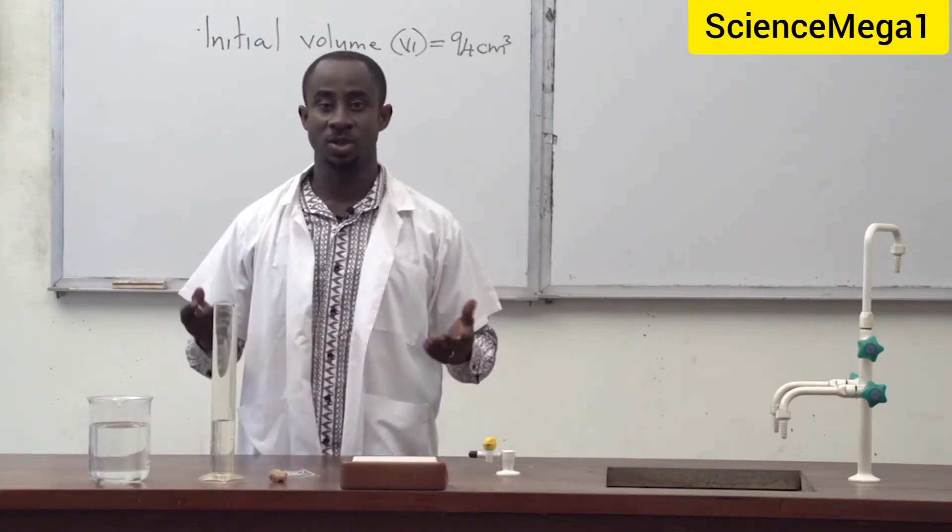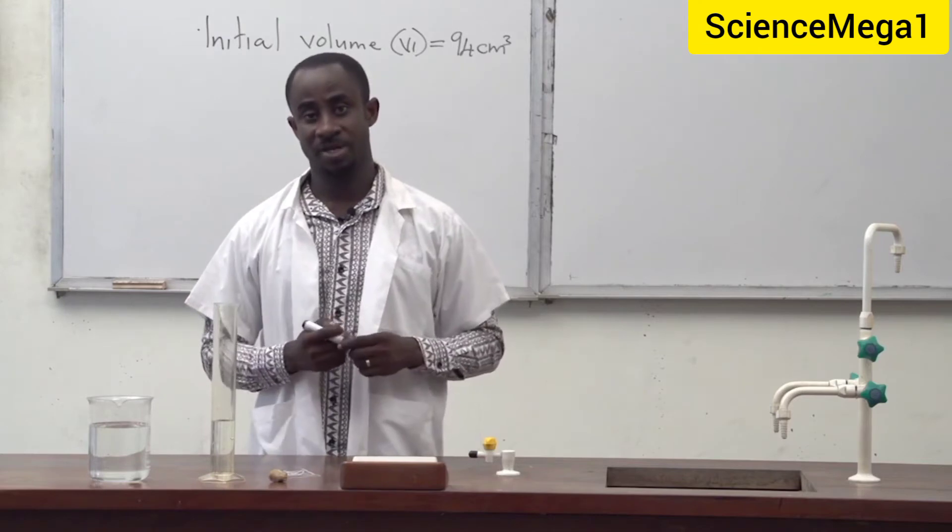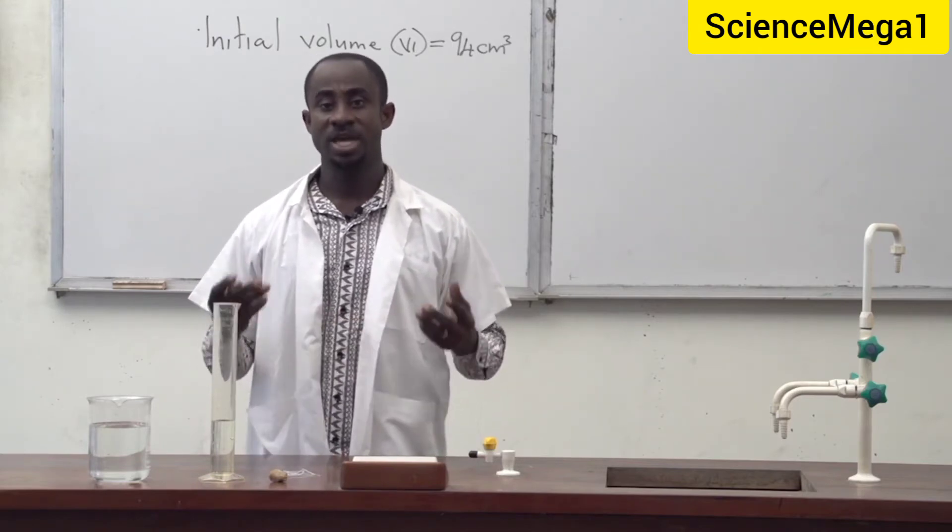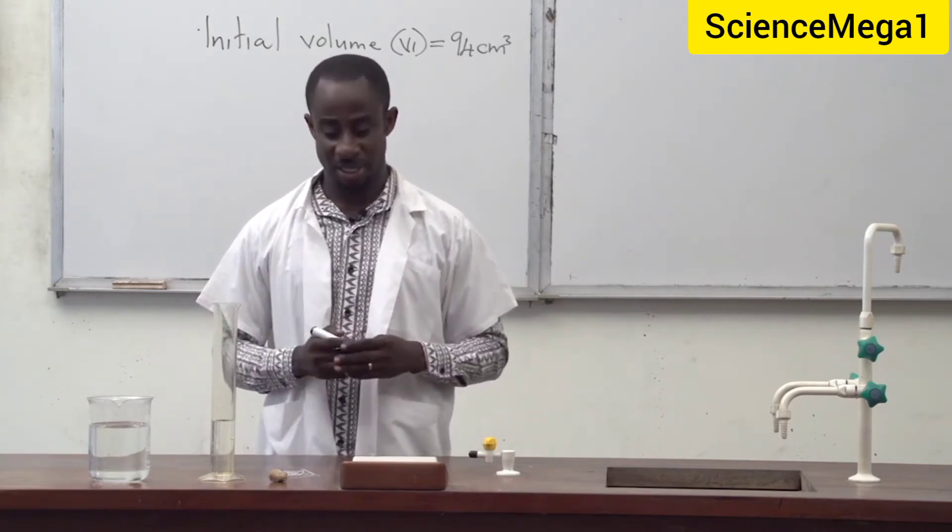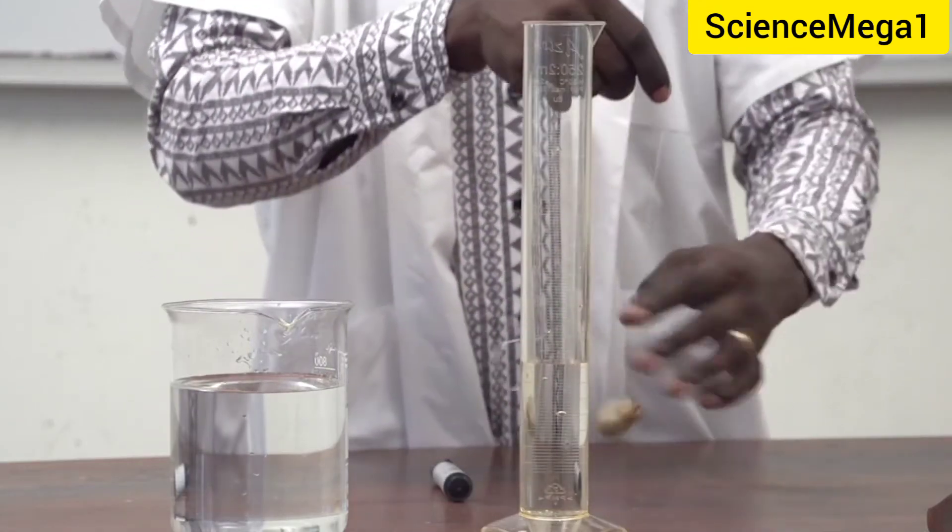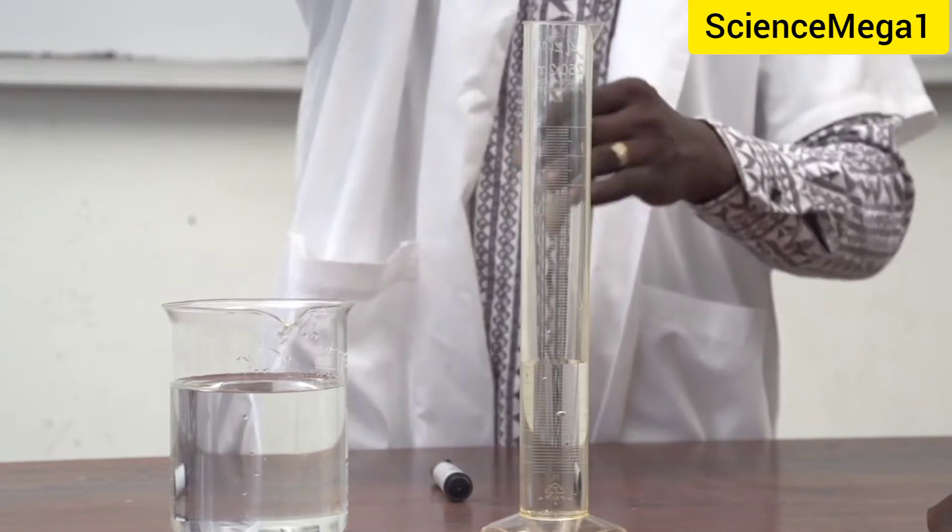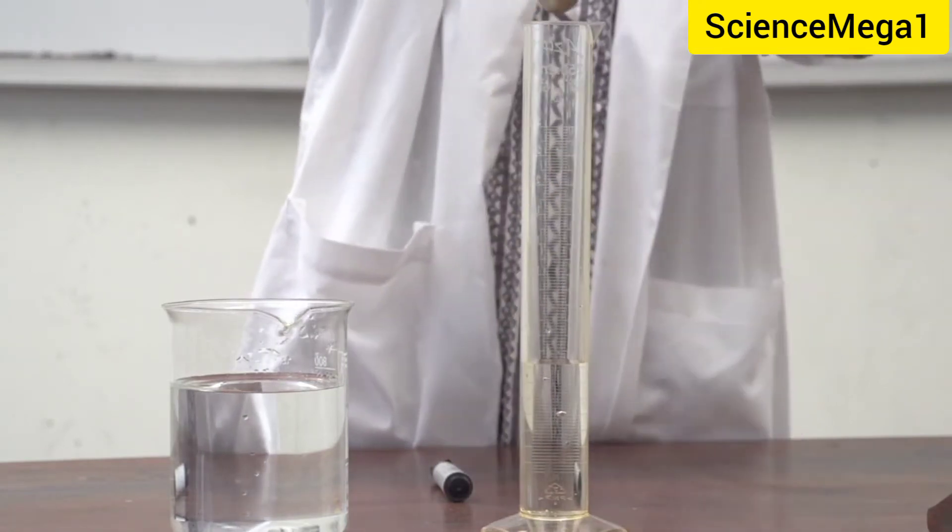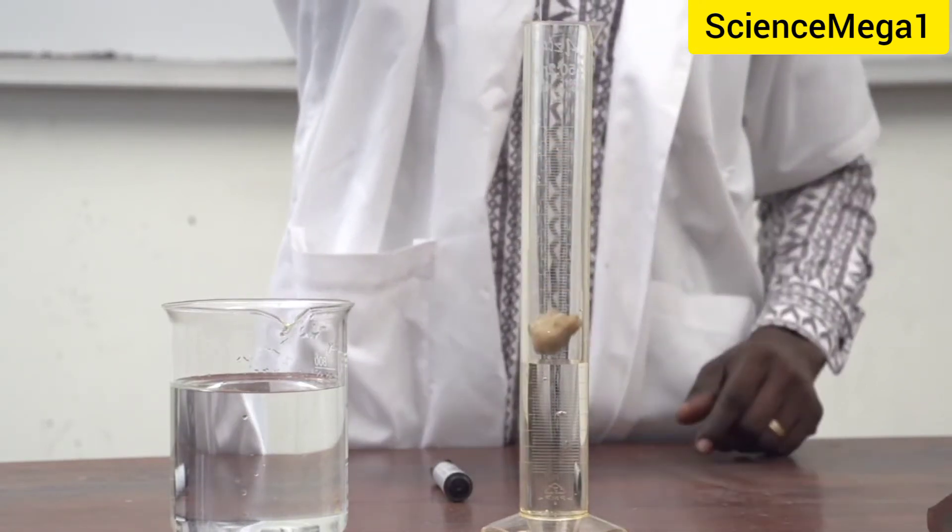Then tie the irregular solid with a string or thread and lower it into the partly filled measuring cylinder. So as you can see I've already tied the stone with the string and you're supposed to lower it gently into the measuring cylinder.